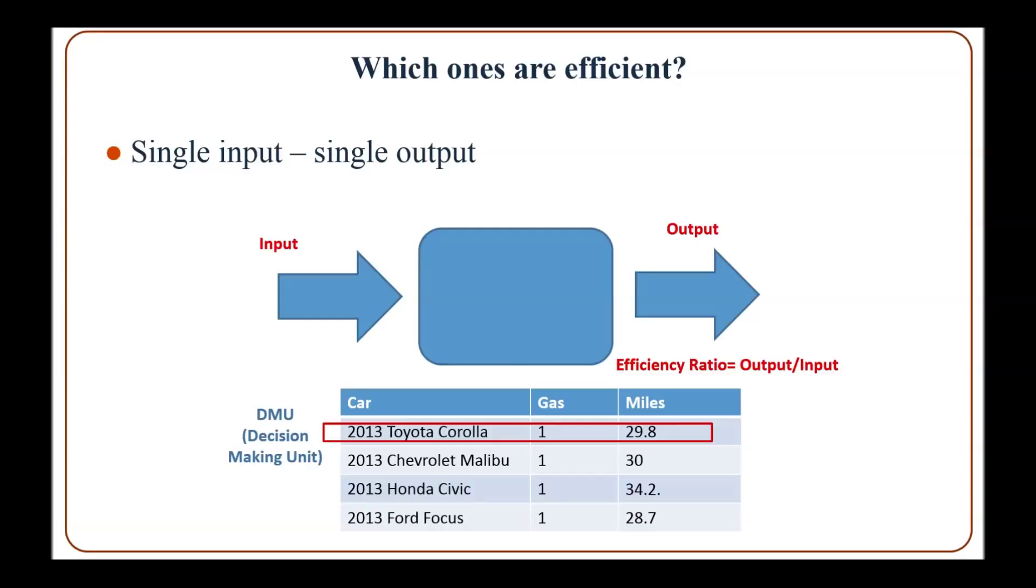Each car model is considered as a decision-making unit or DMU, and easily we can calculate which car is efficient and which one is not efficient.